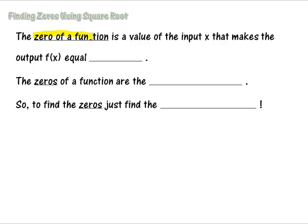The zero of a function is the value of the input x that makes the output f(x), or we could say y, equal zero. That makes sense because it's called a zero. So we want to find x when y is zero. The zeros of a function are the x-intercepts that we found yesterday. So to find the zeros just find the x-intercepts.